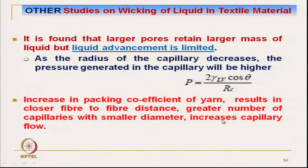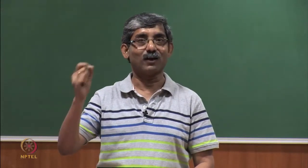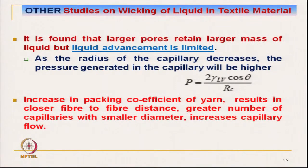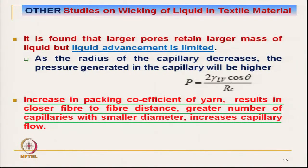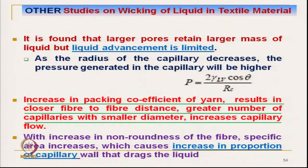Increasing the packing coefficient of yarn means filaments or fibres are coming closer, so the pore radius rc will be low, resulting in closer fibre-to-fibre distance. A greater number of capillaries and smaller diameter capillaries will be present, which increases capillary flow. So smaller pores in larger number are better for liquid transmission through capillaries. The total porosity remains the same, but increasing non-roundness of the fibre is very important.